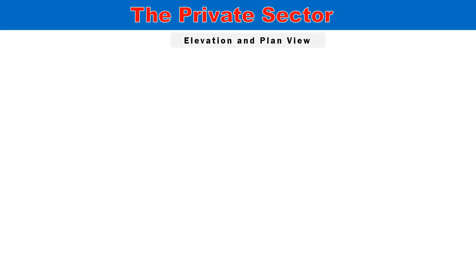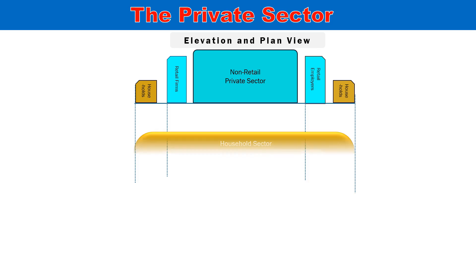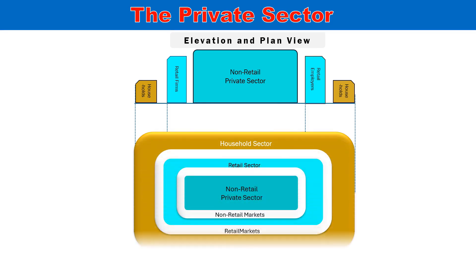In these graphics, the private sector is displayed firstly in the elevation mode, where the white spaces indicate markets between different sectors of the economy. Below this, we can see the private sector in plan view, where the household sector is on the periphery separated from the retail sector by the market conduit. In the center, the non-retail private sector is shown in a darker shade, indicating the main part of the private sector.